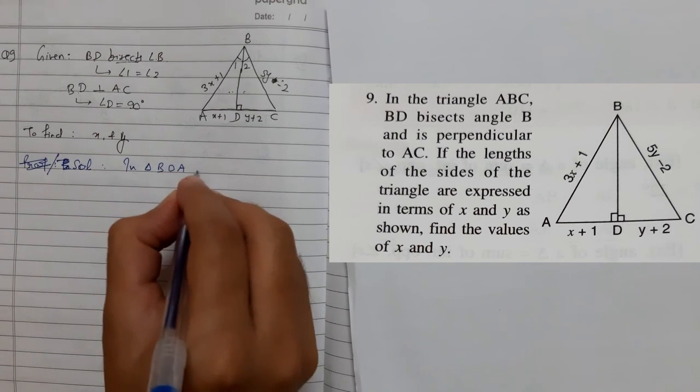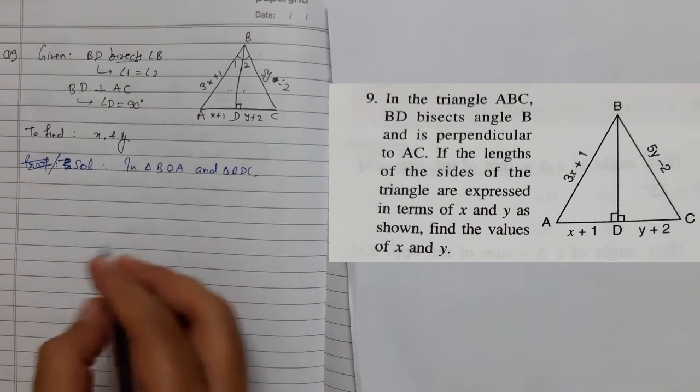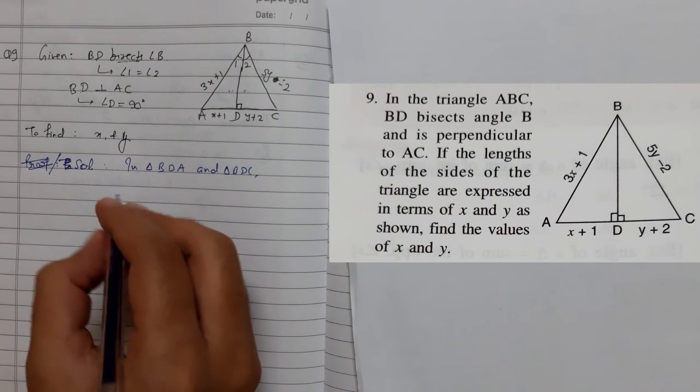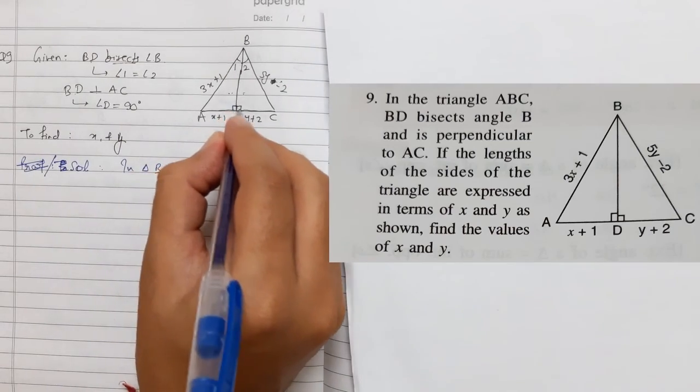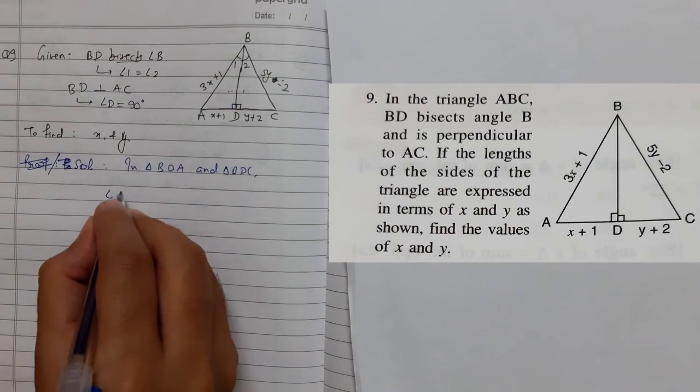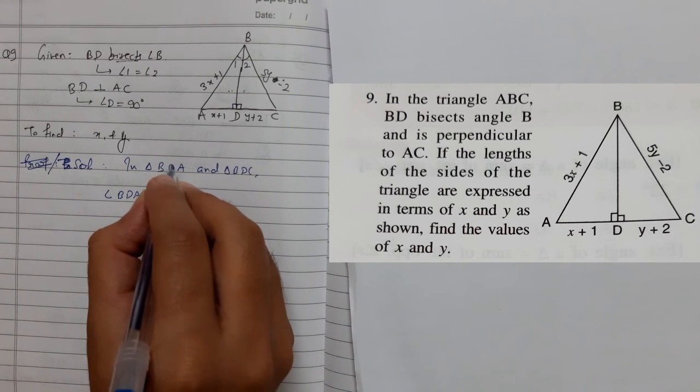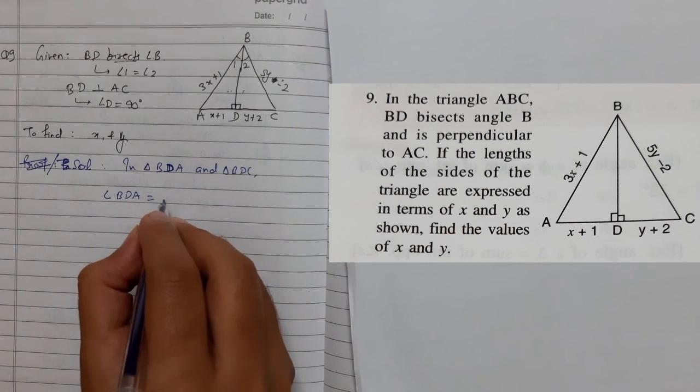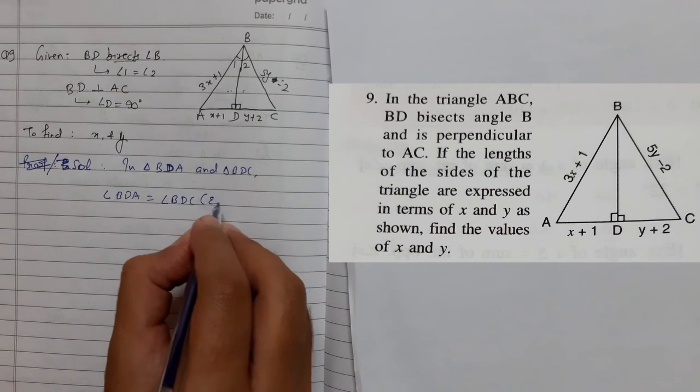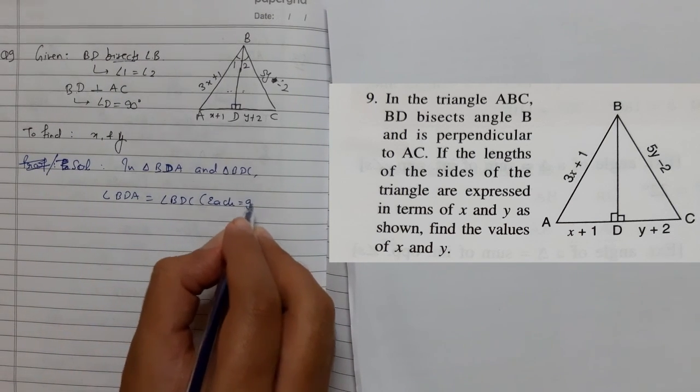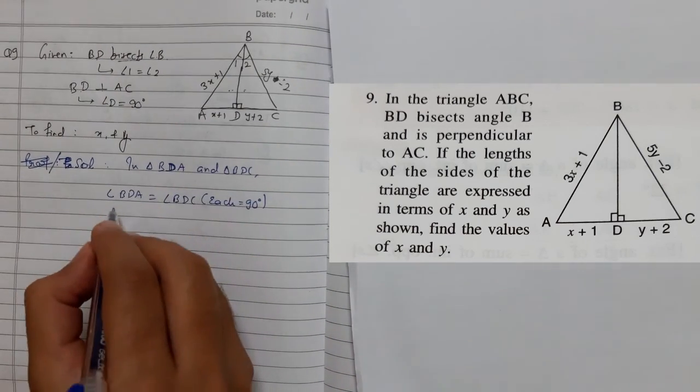In triangle BDA and triangle BDC, if you don't know congruency, watch previous videos. First thing is 90 degree is given: angle BDA equals angle BDC, each equals 90 degrees. It is already given. Second thing is given: angle 1 equals angle 2.